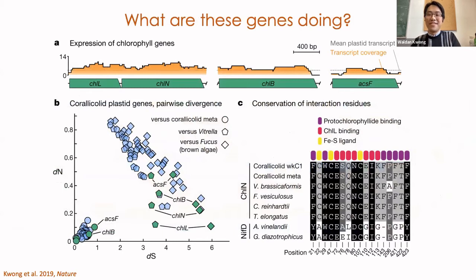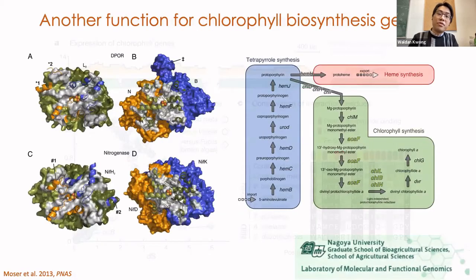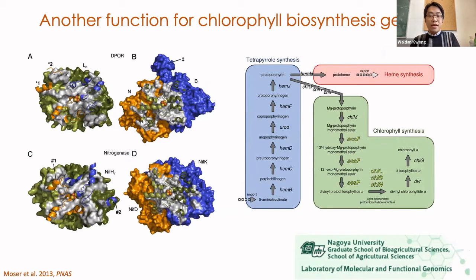So why are these genes being kept around? We don't know of any biochemical function of these genes outside of chlorophyll production. However, we find that these genes are expressed and they are among the most evolutionarily conserved genes in the Corallicolida plastid genomes, shown here with relatively few non-synonymous substitutions. They also retain all the key residues thought to be important in protein substrate binding. We are currently working with a group at Nagoya University who are experts in chlorophyll biochemistry to determine gene function, and they have some very interesting results suggesting that these well-characterized photosynthetic pathways may be performing a previously unrecognized novel function, which is really exciting.